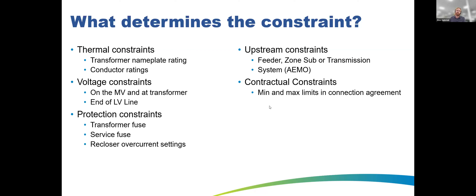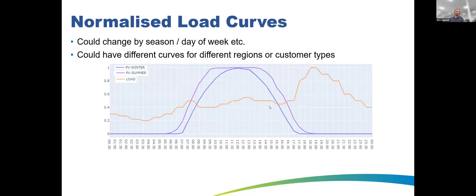We also have contractual constraints with the customer. When they sign up we offer a minimum–maximum limit, for example 1.5 to 10 kW. We can't go below 1.5 except in emergency situations, as that's the guarantee in the contract. For the scheduled basic method, we don't have real-time transformer power flow data. Profiles vary by season, day of week — weekdays, weekends, and public holidays differ — and by region. Queensland is a large state, so Cairns has a very different load profile to somewhere like Toowoomba.